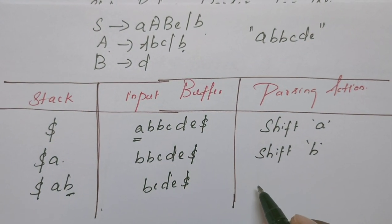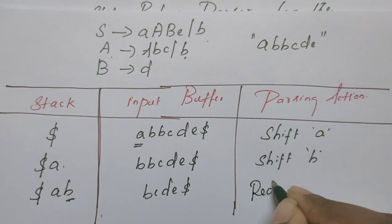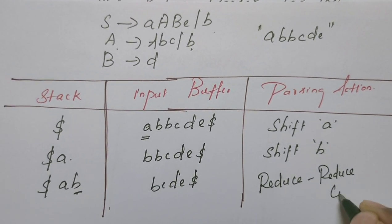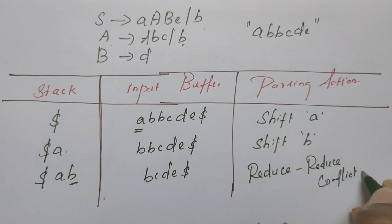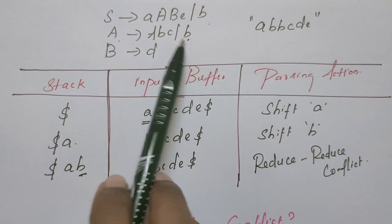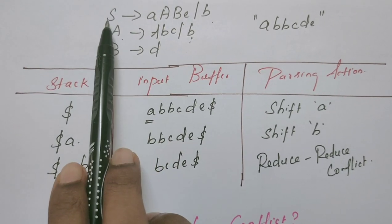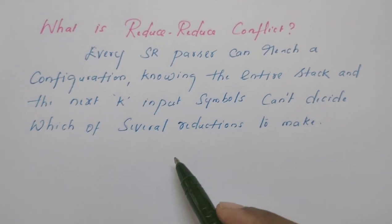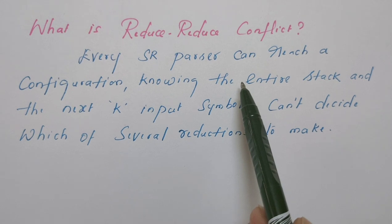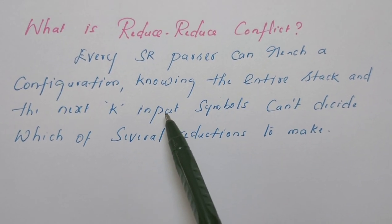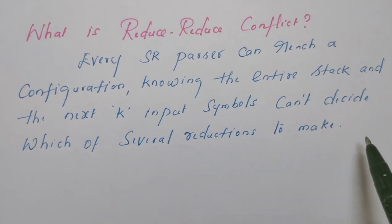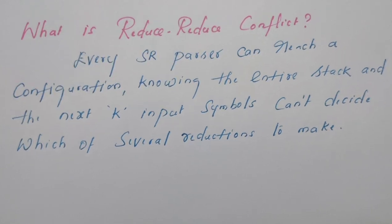This is known as reduce-reduce conflict, because the shift-reduce parser at this moment cannot decide whether this B should be reduced to A or to S. The definition: the SR parser, knowing the contents of the stack as well as the input buffer, cannot decide which of several reductions to make. Such a conflict is known as reduce-reduce conflict.